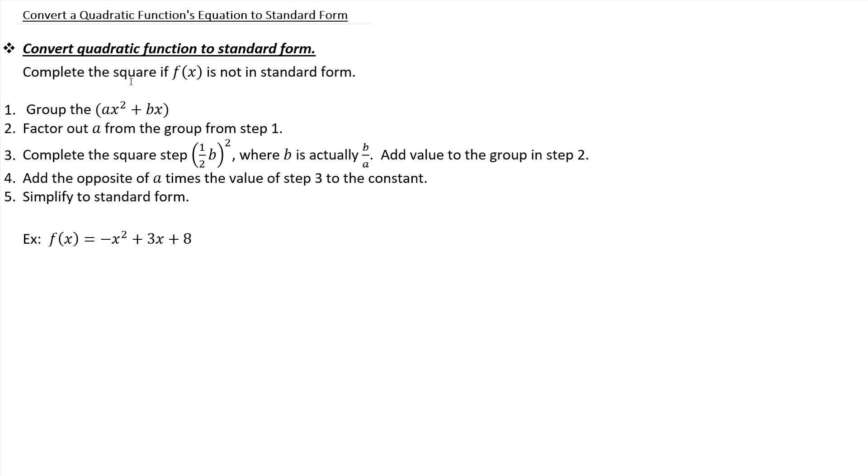I'm going to show an example where we go through the process. The first part of the step is you want to group together your ax squared plus bx piece. So in this case it would be negative x squared plus 3x. Put those together in a group and then keep the constant separate, so plus 8.